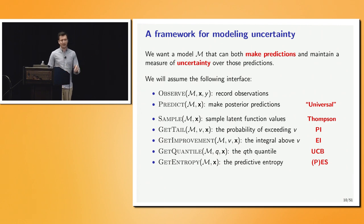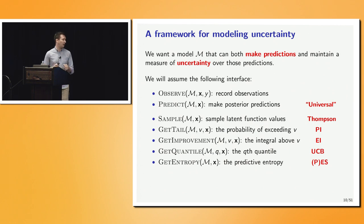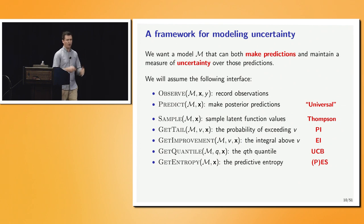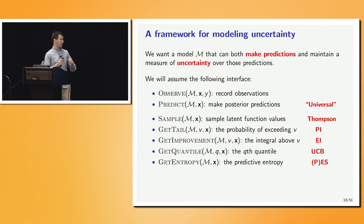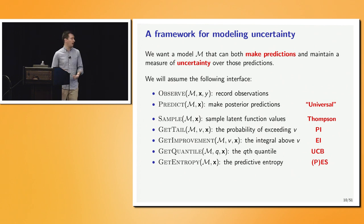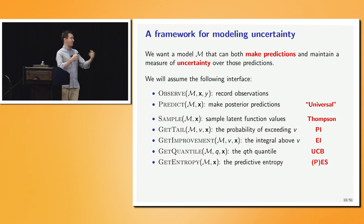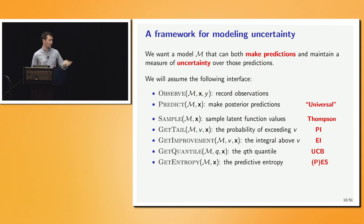Making observations and predictions are universal requirements — you can't do Bayesian optimization without them. But as soon as you can sample from your model, you can perform Thompson sampling, which is perhaps one of the easiest methods to implement. If you can get tail probabilities, you can perform probability of improvement (PI). With improvement you can compute expected improvement (EI). With quantiles you can implement upper confidence bound (UCB) type algorithms. And with entropy you can use entropy search or predictive entropy search.